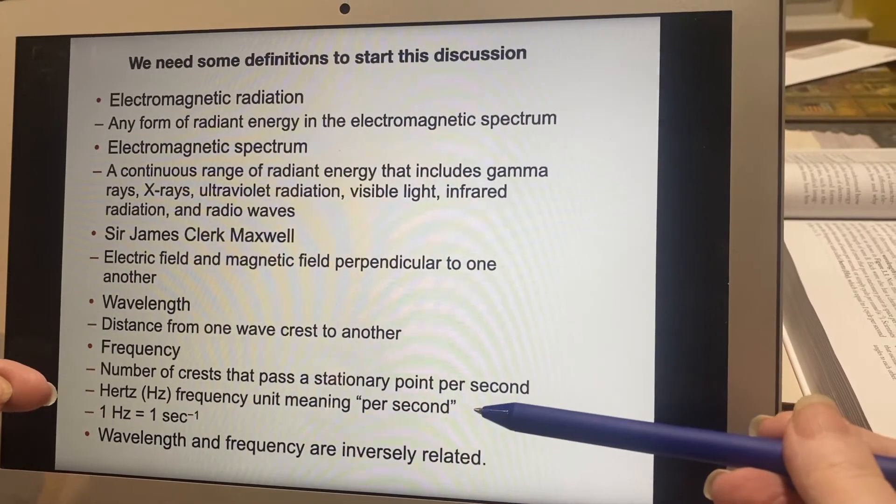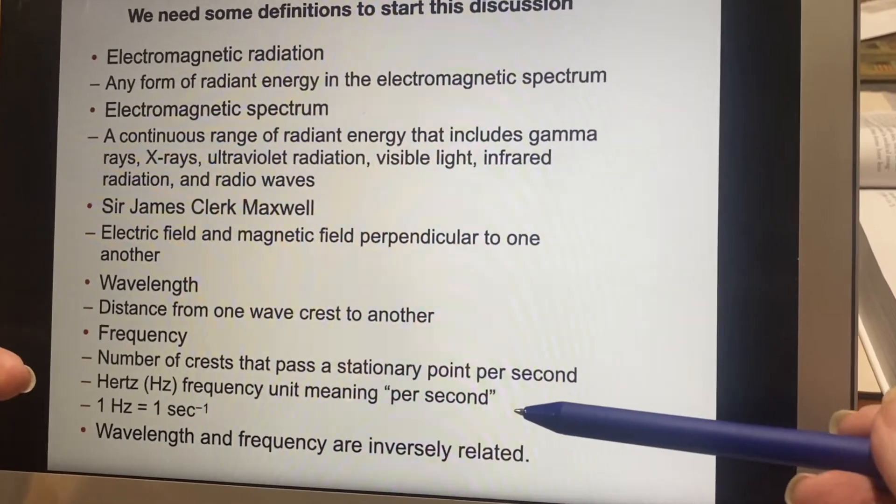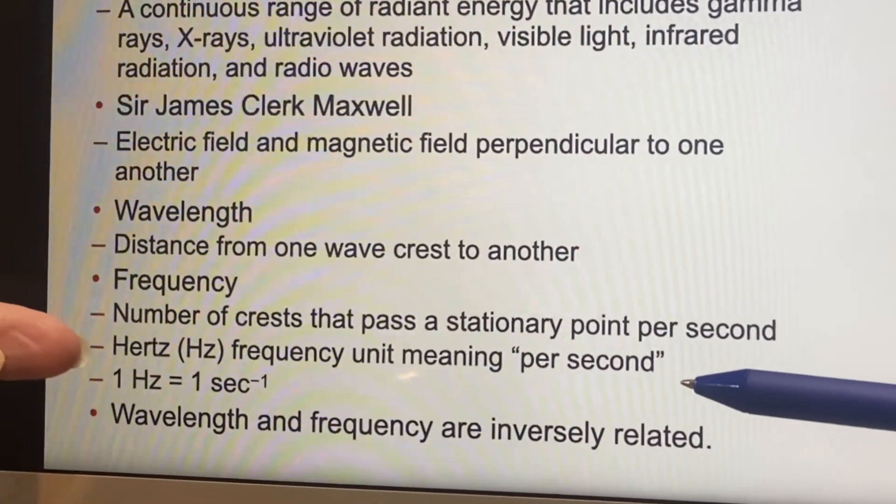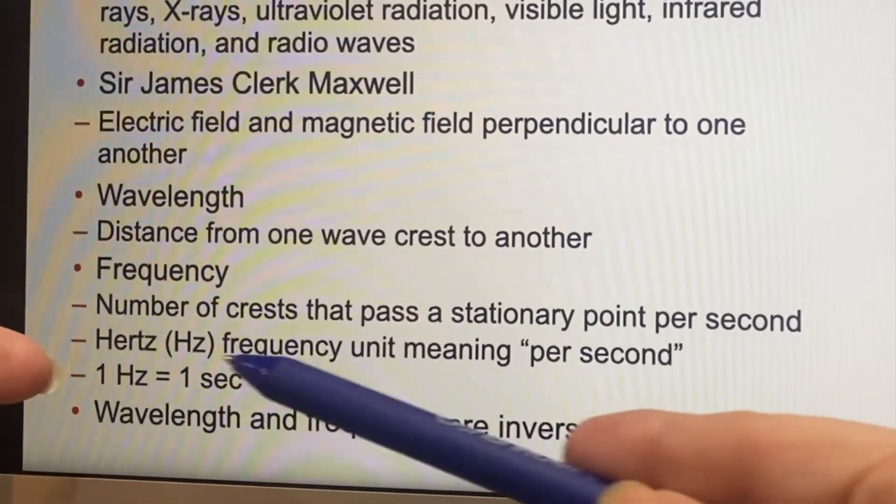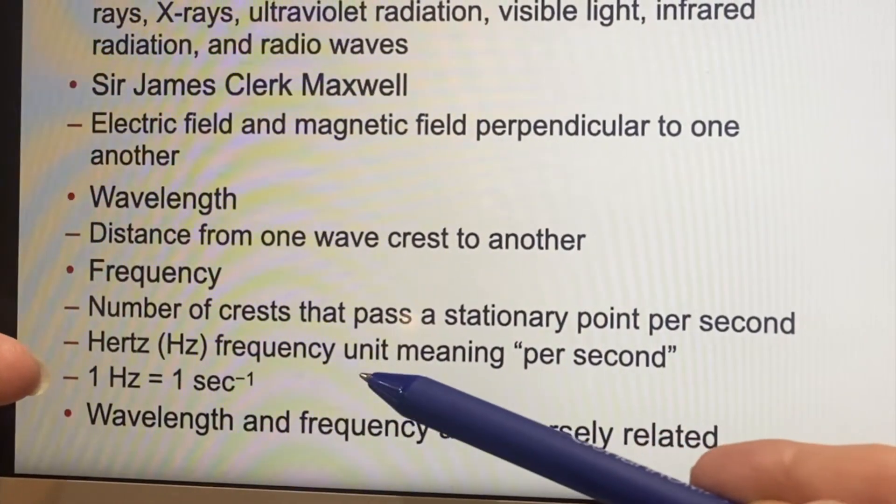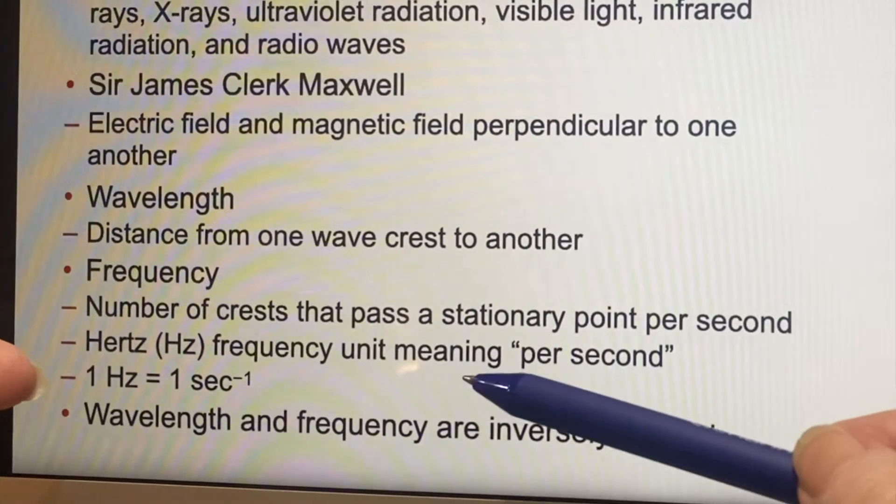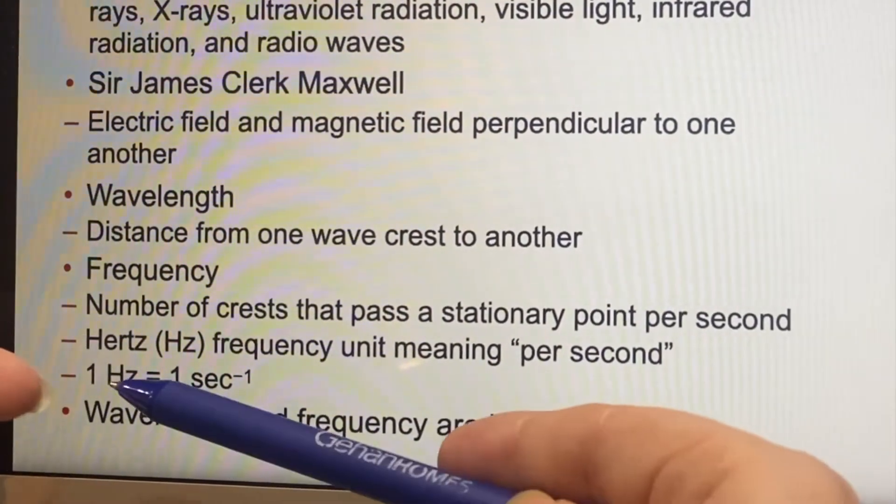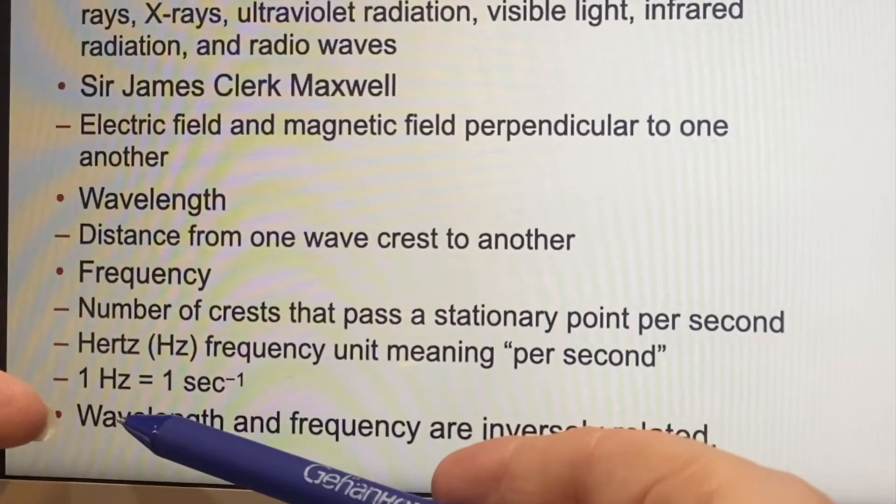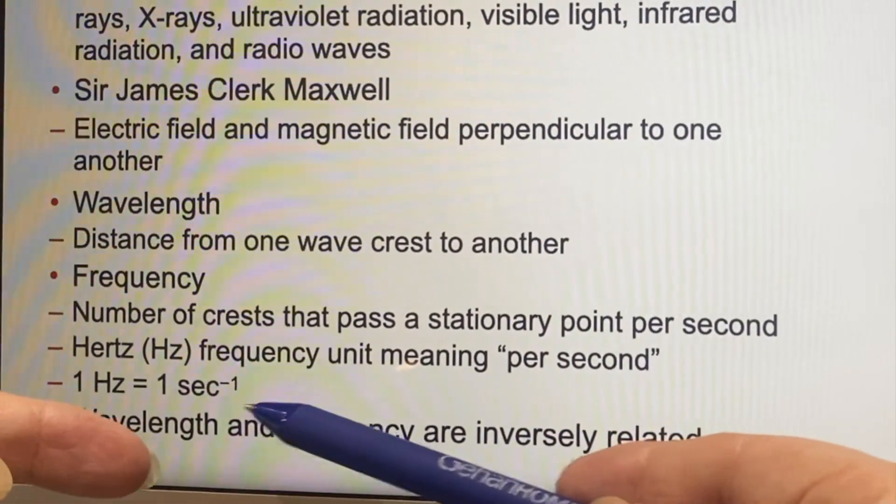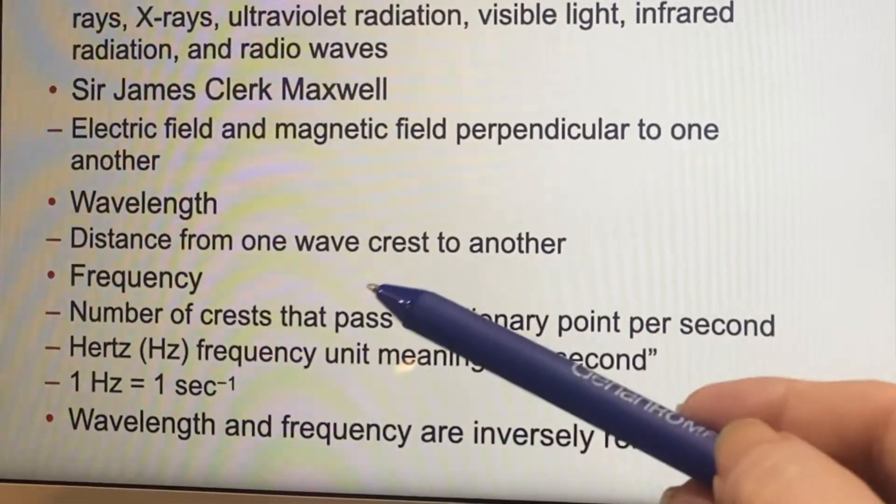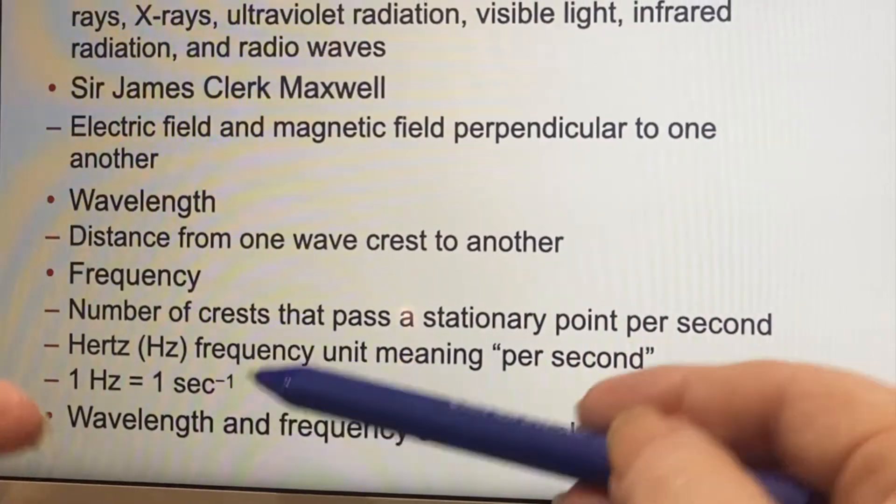Because one of the important people who was working on this way back when was named Hertz, they've decided to give a frequency unit the name Hertz. It means per second. So if you see something and it says so many Hertz, it's just so many cycles per second, cycles, crests, however you want to say it, how many per second.